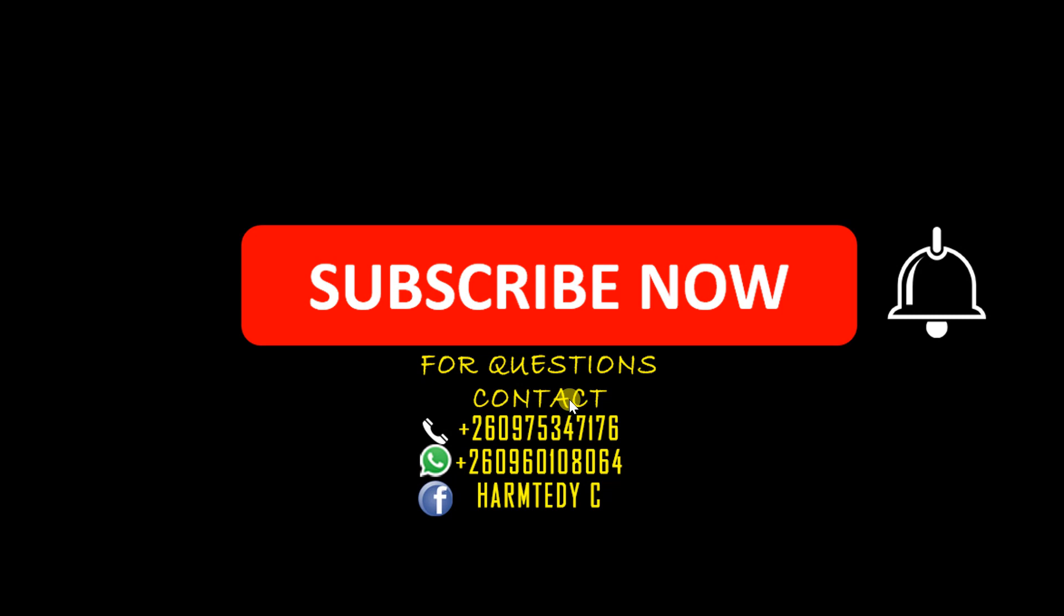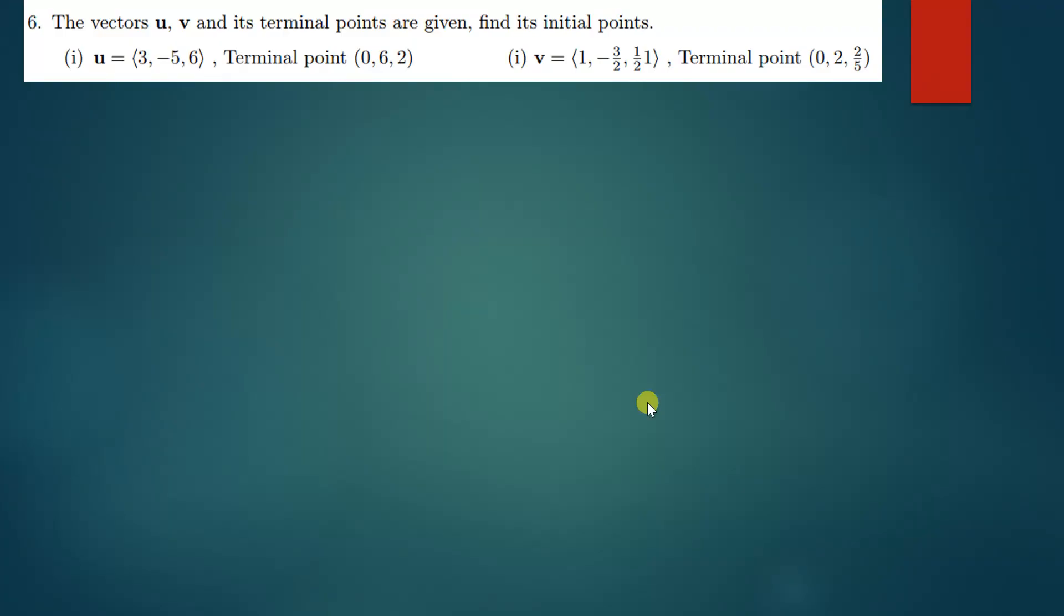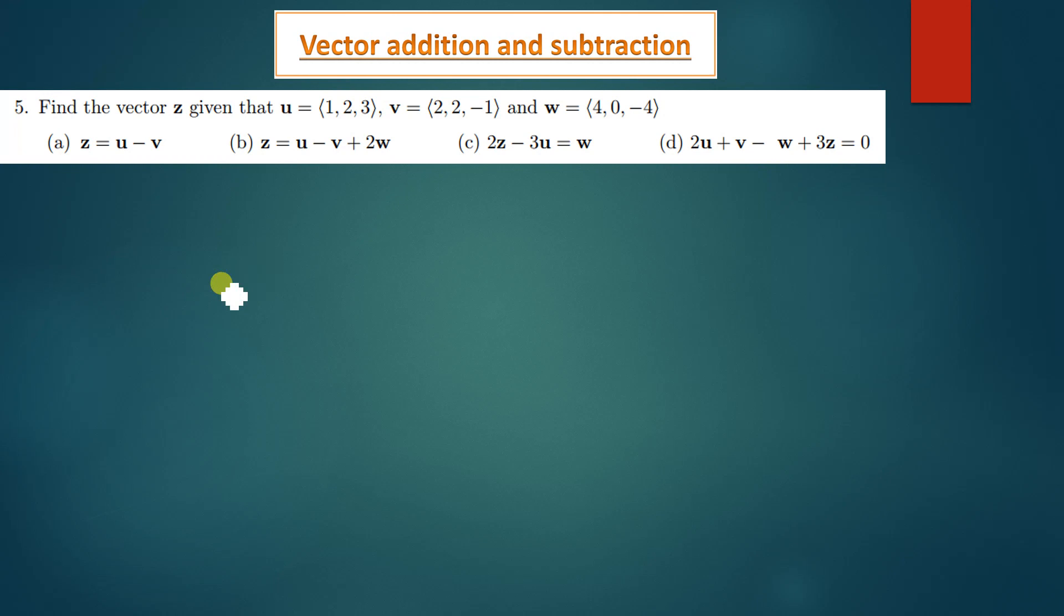Alright, so let's quickly begin to solve the questions. The first question is asking us to find the value of z, which is given by u minus v, because u has been given, v has been given and w has been given. So here what we're just finding is the value of z.